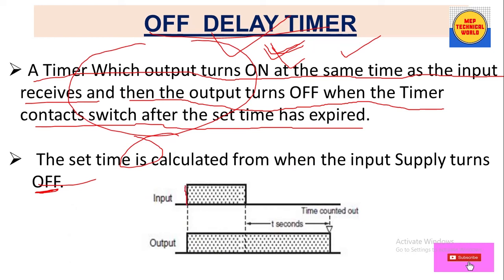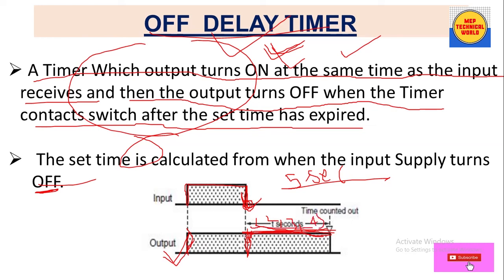When the input is high, the output is also high at the same time. As long as the input remains high, the output stays high. When the input goes to zero — from that point — the timer starts counting. Suppose we set five seconds: the output stays high for five seconds while the timer counts one, two, three, four, five. After completing five seconds, the output goes low and the load turns off.